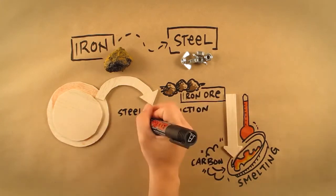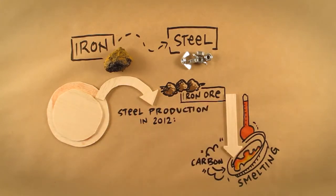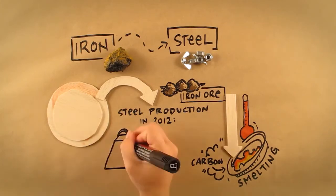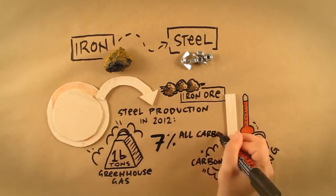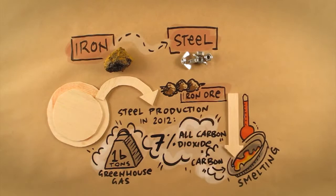According to Australian CSIRO researchers, in 2012 steel production was responsible for an estimated 1 billion tonnes of greenhouse gas emissions, and contributed to around 7% of all carbon dioxide produced from fossil fuels.